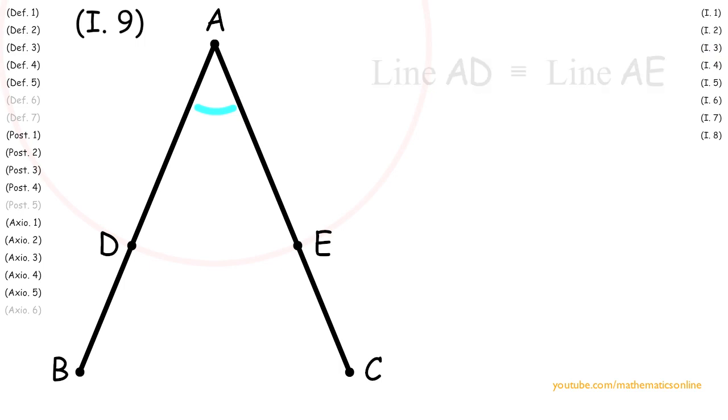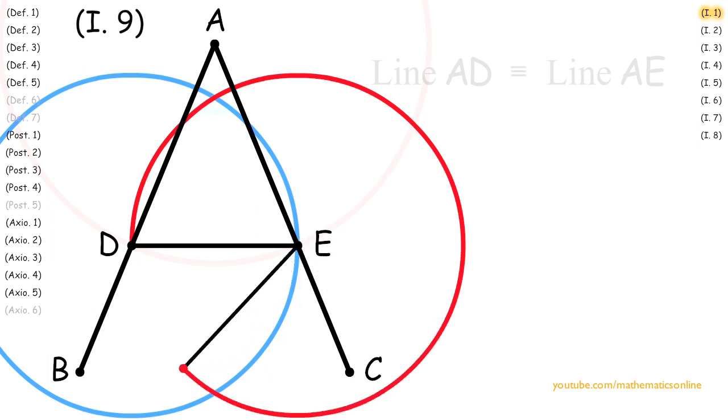Next, with Postulate 1, we create line DE, and on line DE, we apply Proposition 1 to create a perfect equilateral triangle.